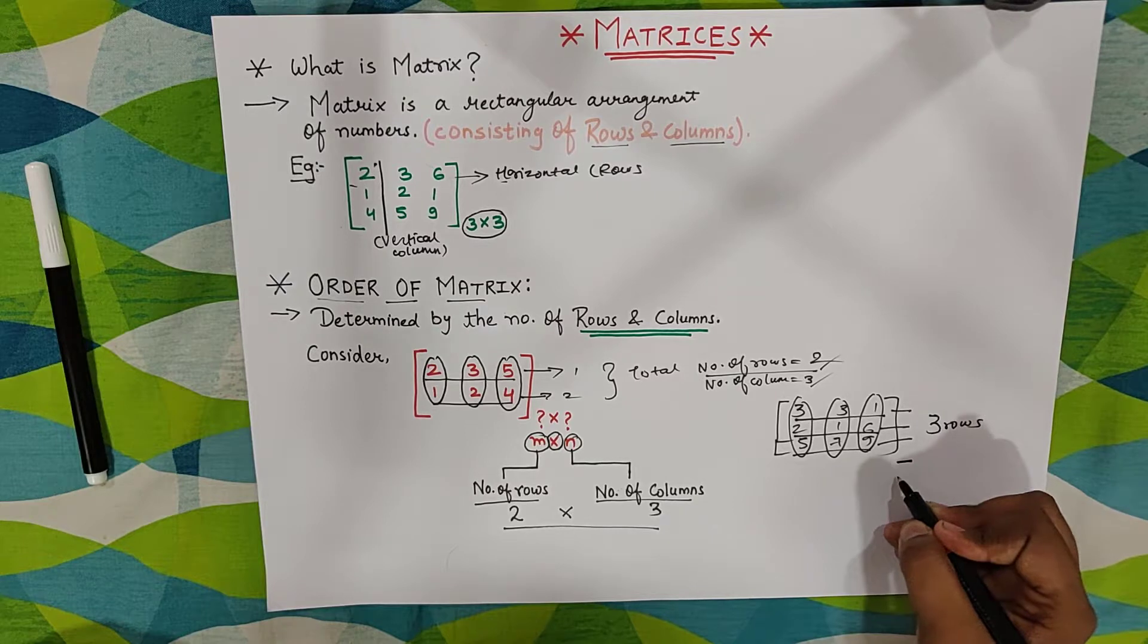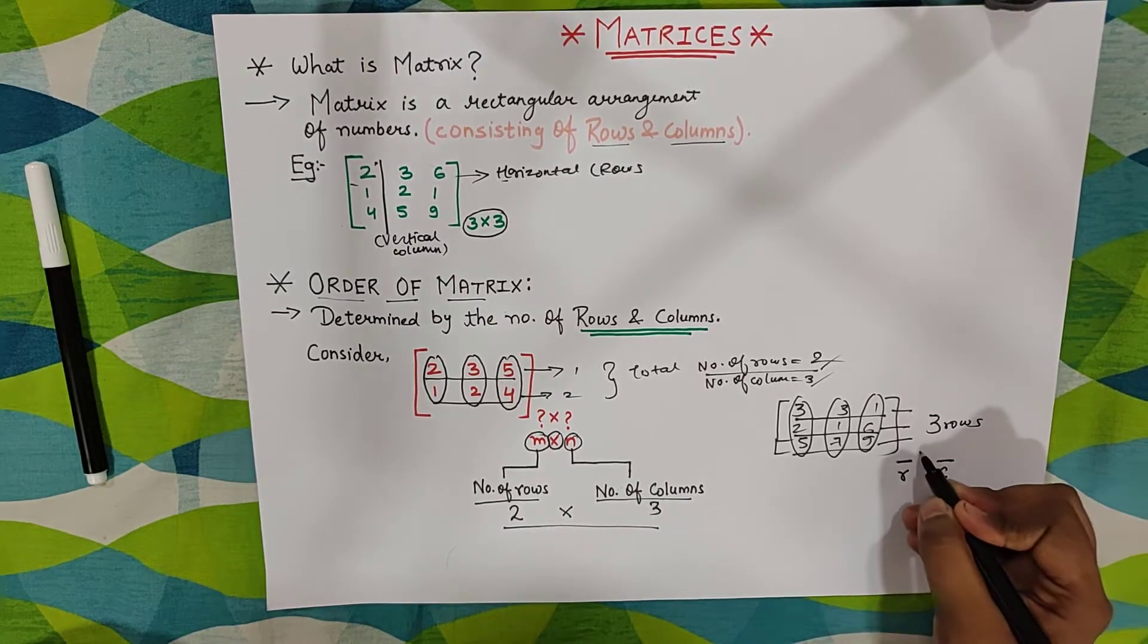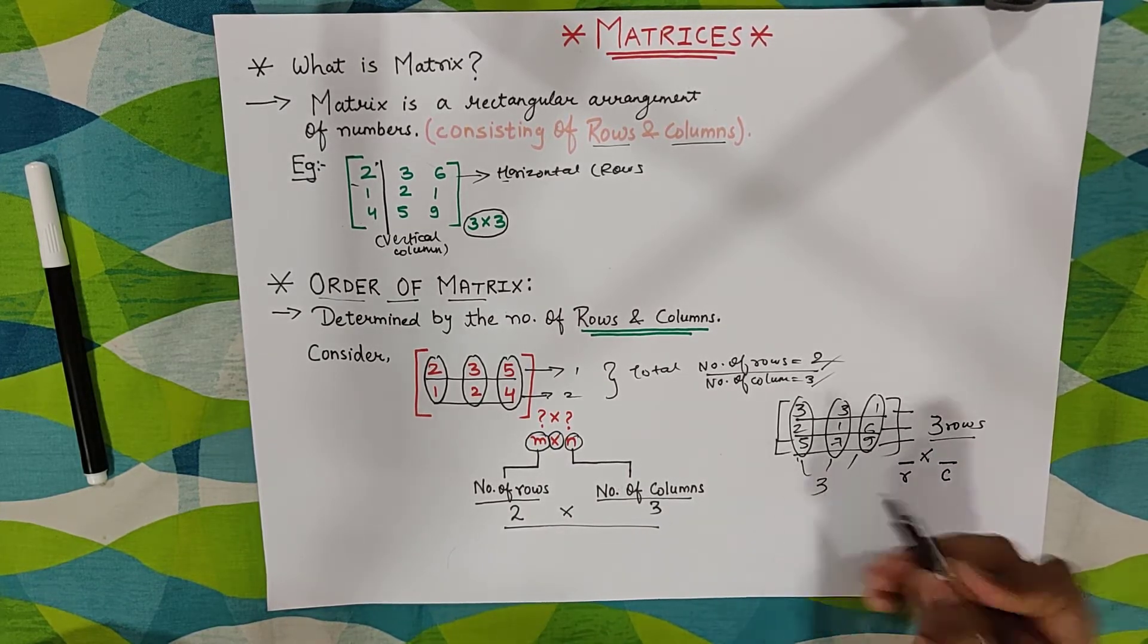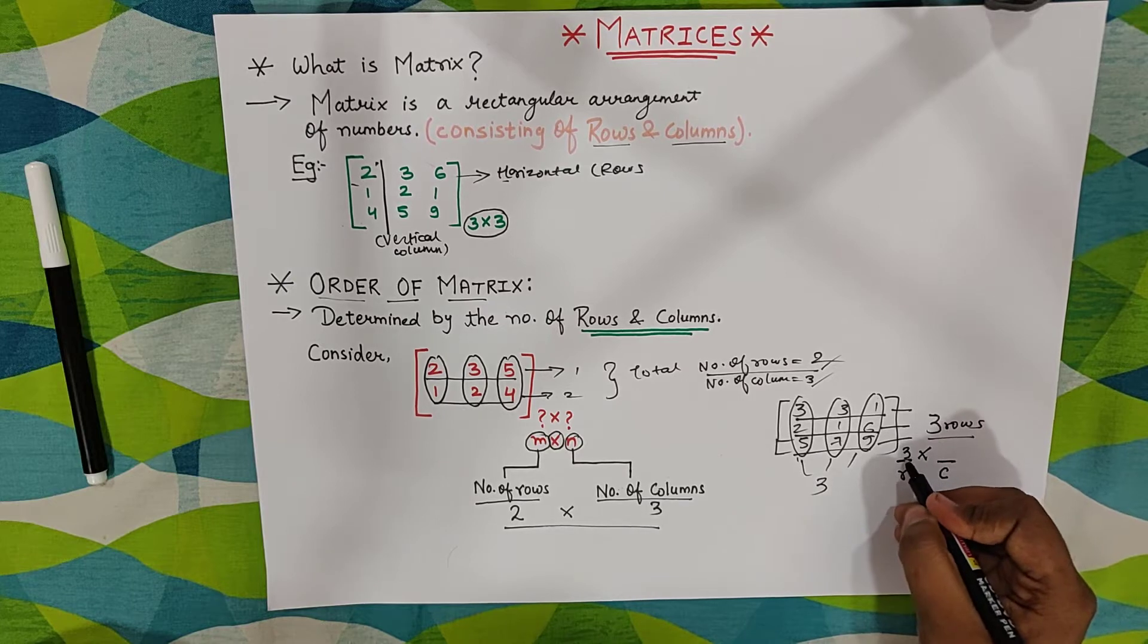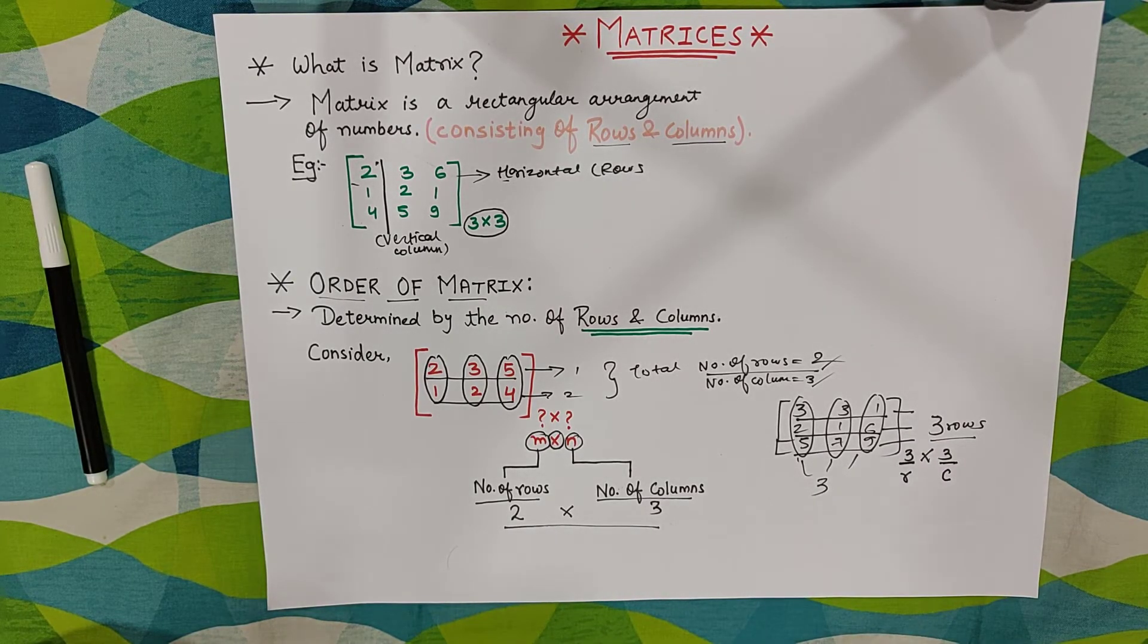First we write number of rows. Then we write number of columns. In between we put a cross. Number of rows are three. Number of columns are three. So we will write three cross three. And that will determine our order of matrix.